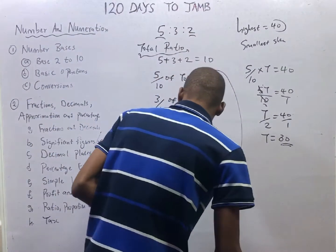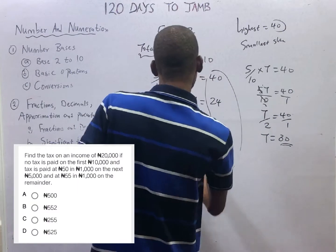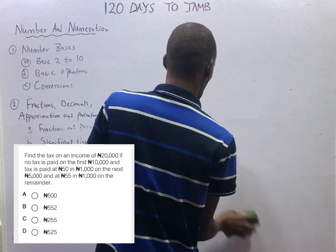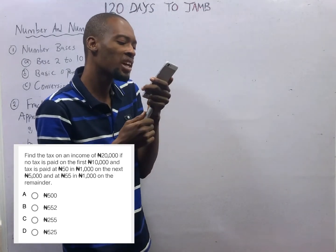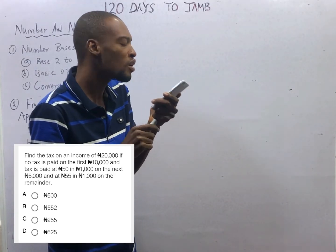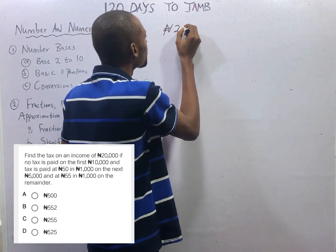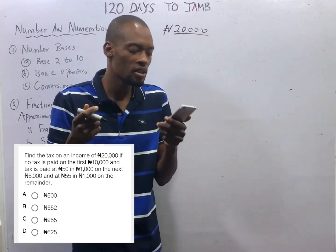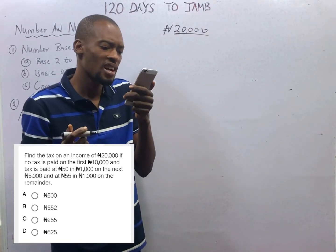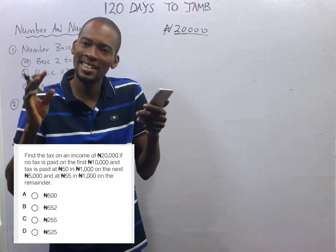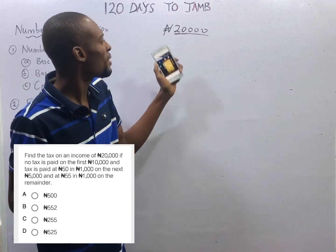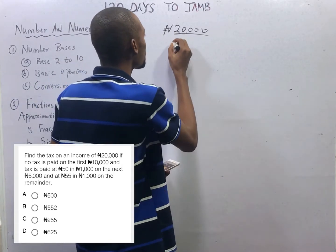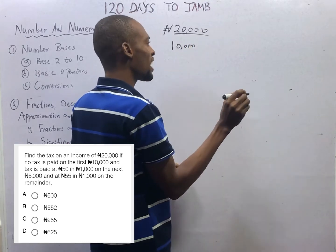Find the tax paid on an income of 20,000 Naira. Tax was paid on it, and it says no tax was paid on the first 10,000 Naira. The person's income is 20,000 Naira, and the first 10,000 Naira has no tax.